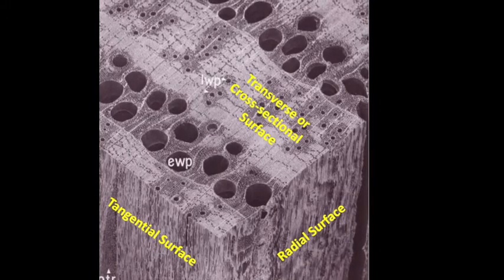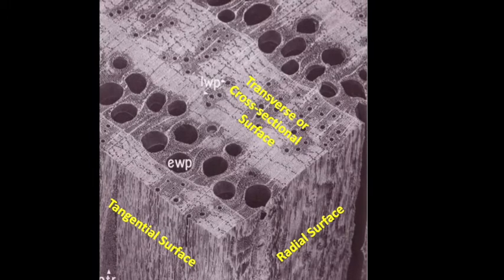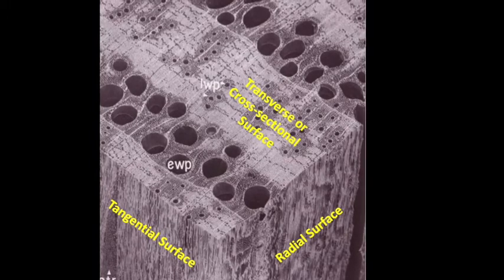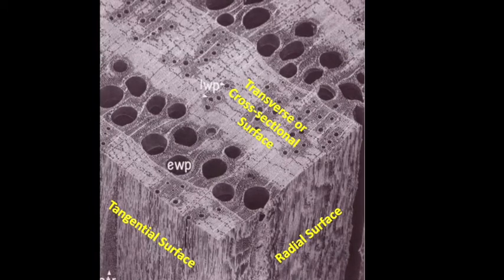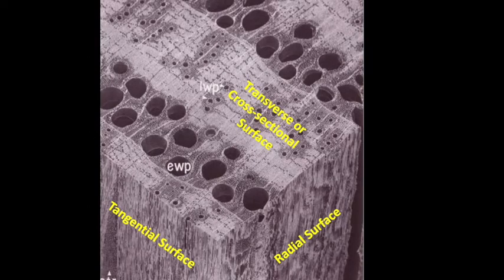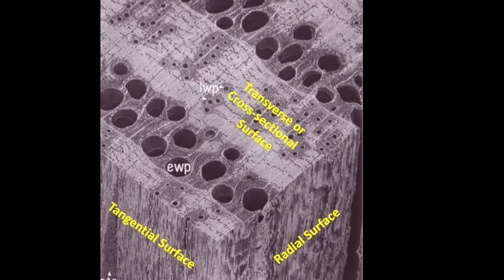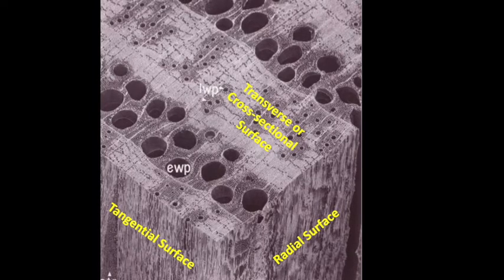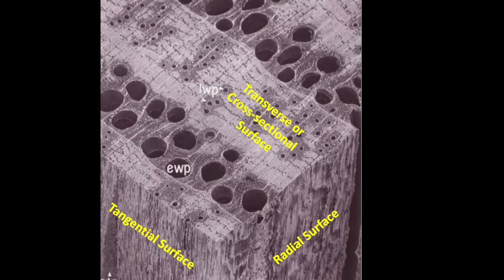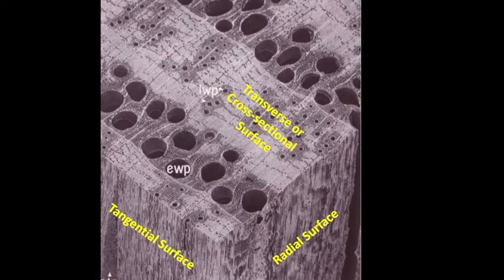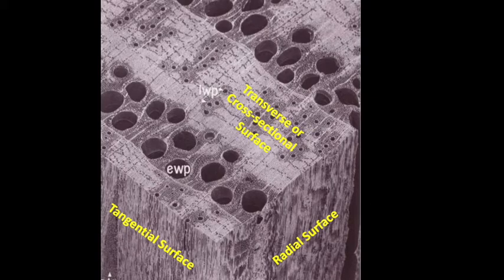On the end grain or cross-sectional surface of a hardwood, we often can see the cut ends of the vessels, which we more commonly just term the pores of the wood. In this image, we see pores labeled EWP for early wood pores and labeled LWP for late wood pores. If these pores are large enough, for example in the early wood of many oak species, we can see them with the naked eye.